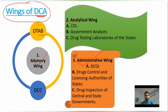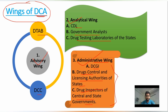In the Analytical Wing, the Central Drug Laboratory (CDL), Government Analysts, and Drug Testing Laboratories in different states are the main pillars. In the Administrative Wing, the Drug Controller General of India (DCGI), Drug Control and Licensing Authorities of different states, and Drug Inspectors of central and state governments are the pillars.